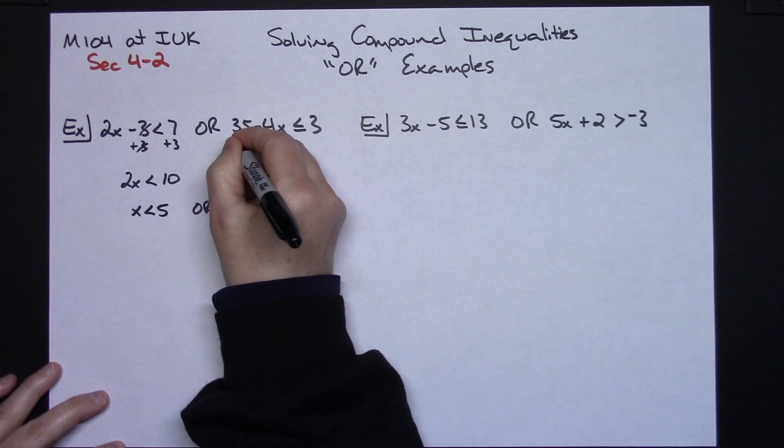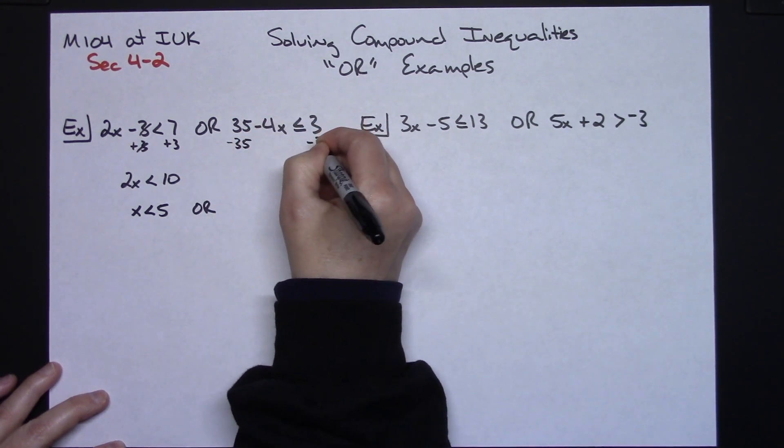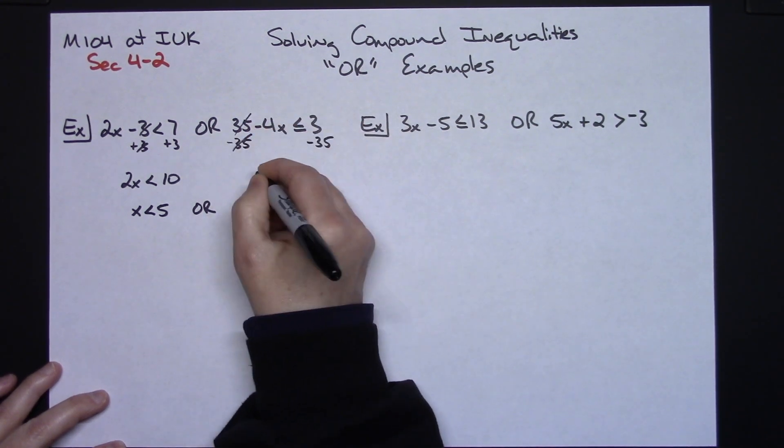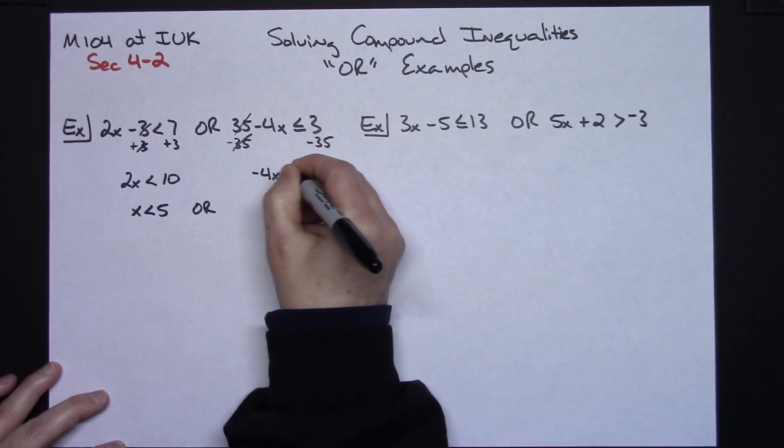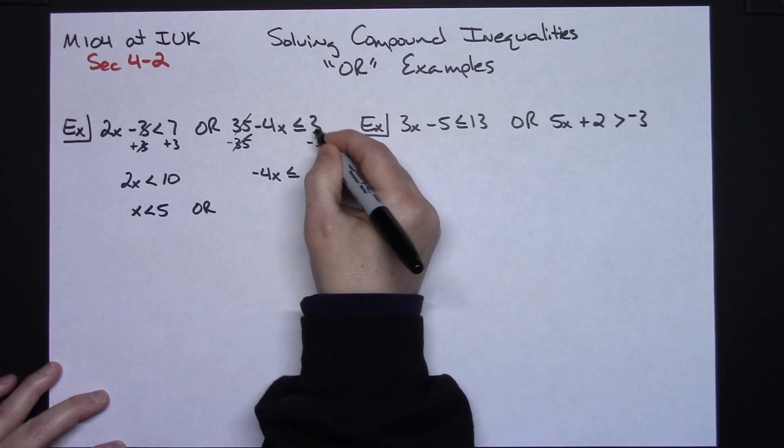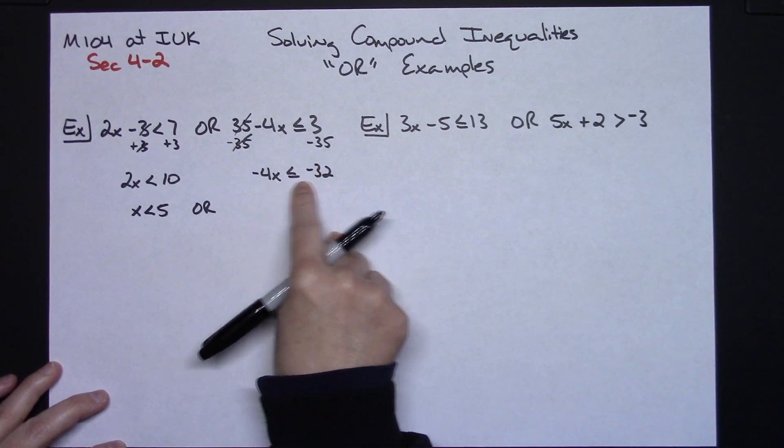Now I'm going to need to subtract 35 from both sides of the equation. That's going to give me negative 4x is less than or equal to, adding here, I'm going to get negative 32.